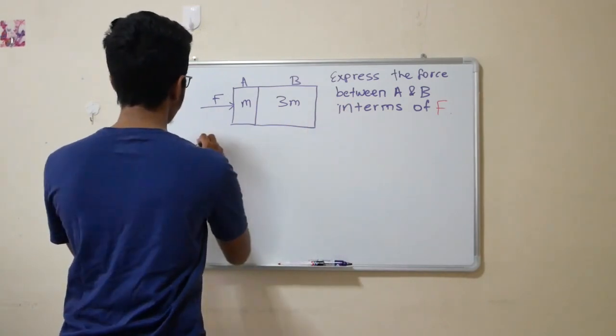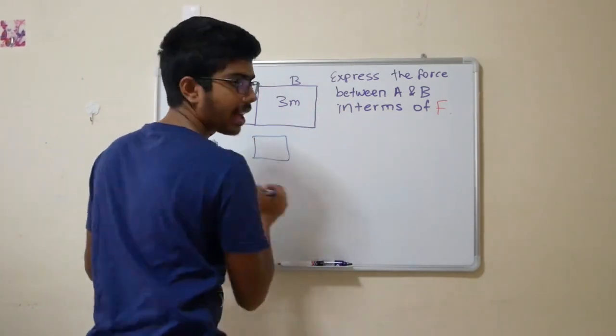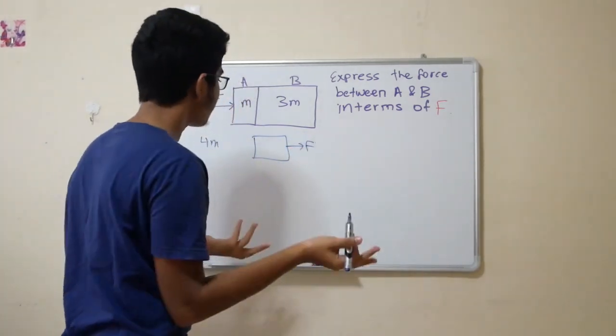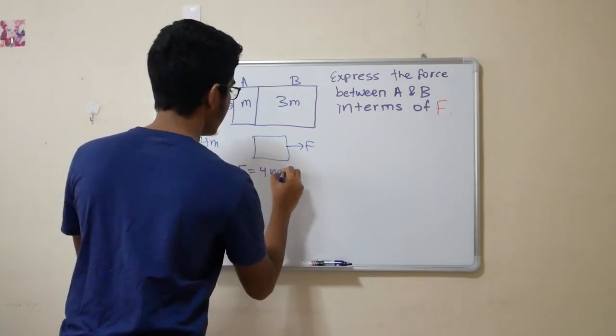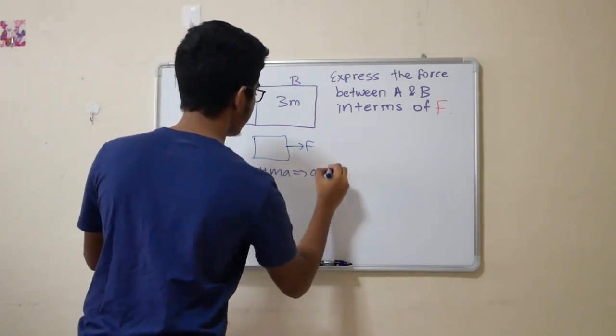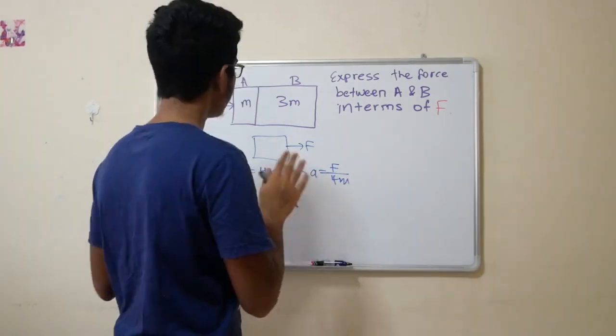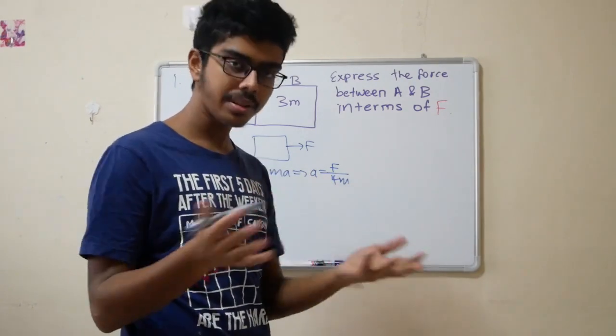If we look at the forces acting on the entire A, B system, we have the force F only. This is so simple. You have chosen the right system. So, F equals 4MA. You express A as F over 4M. Very simple, guys. Now, do this thing for bodies A and B on your own.